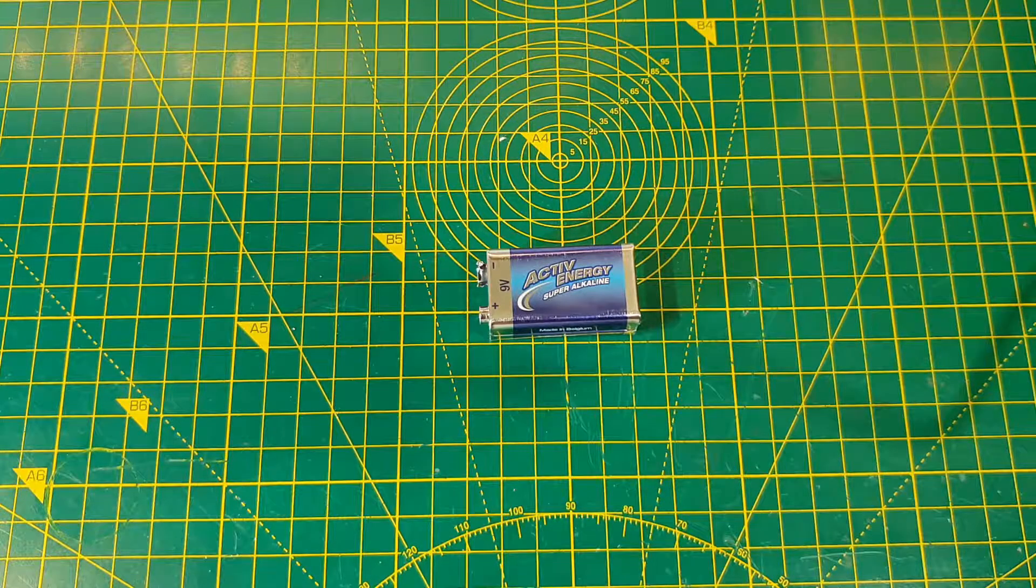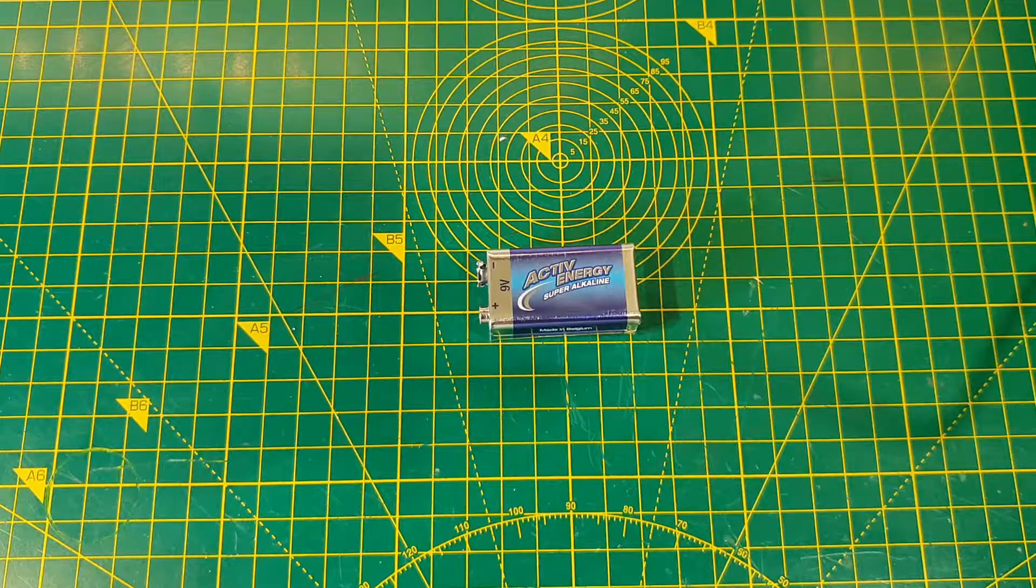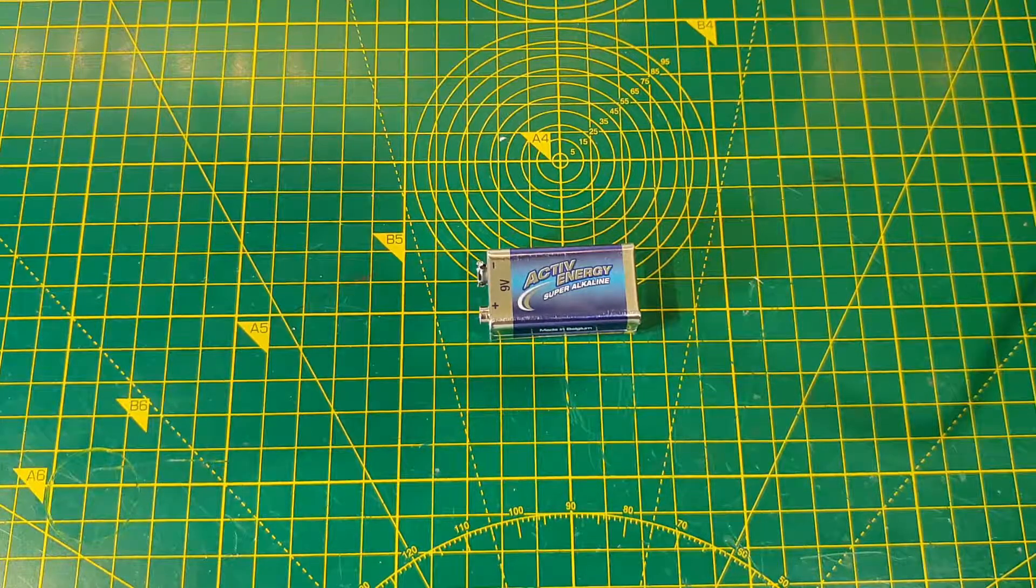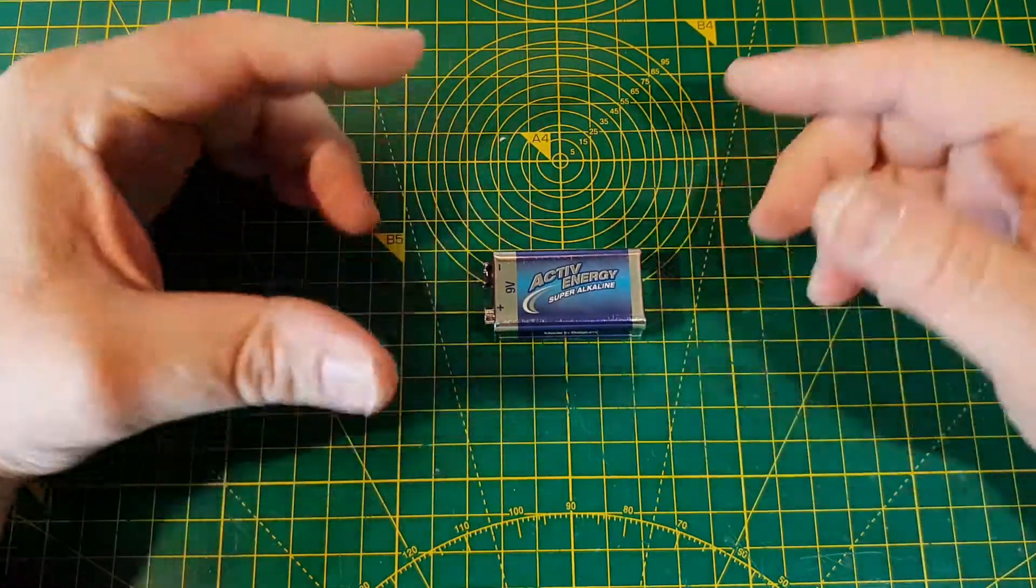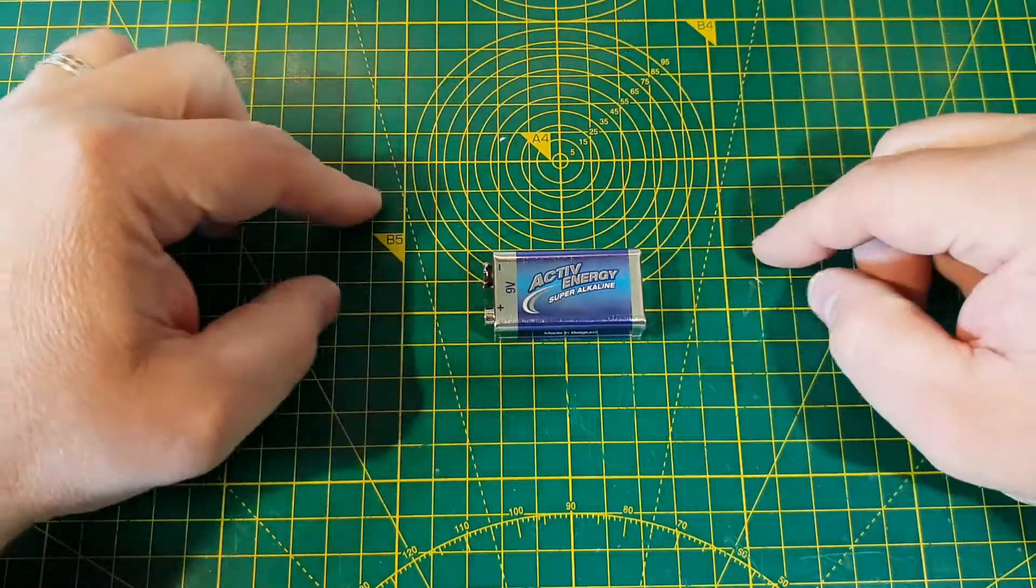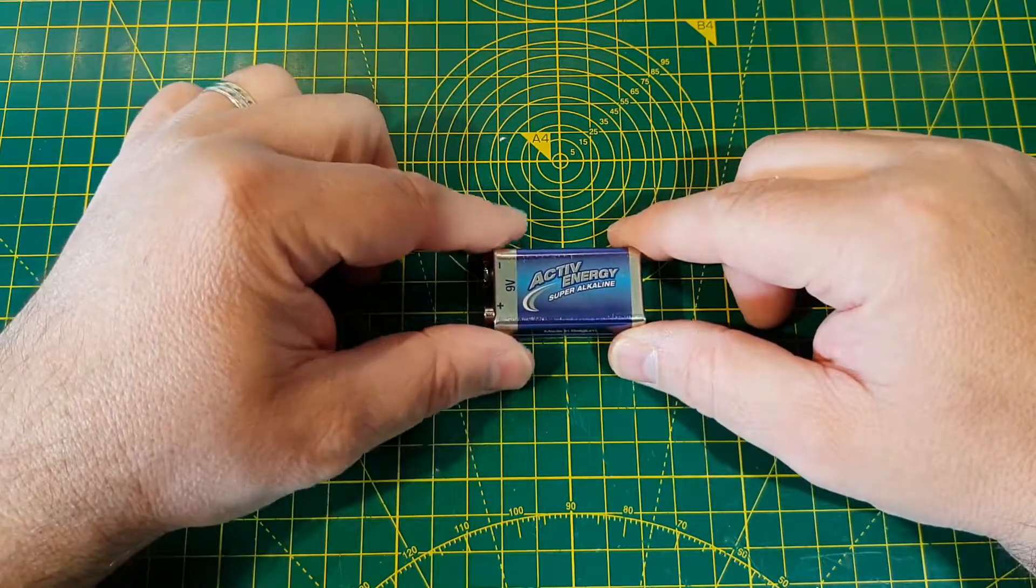Hello again YouTube. Yesterday I took apart a zinc chloride PP3 cell. I found out that it had half a dozen little cells inside full of black carbon type material, and I got to wondering what was inside an alkaline PP3.